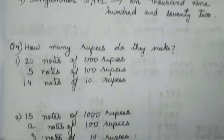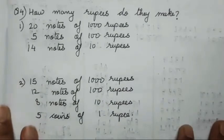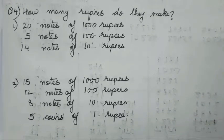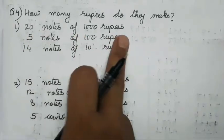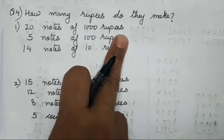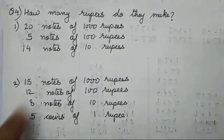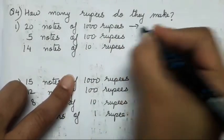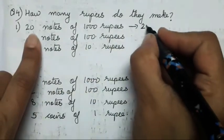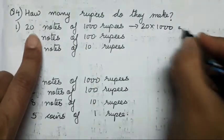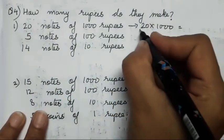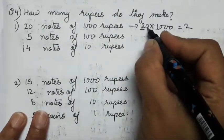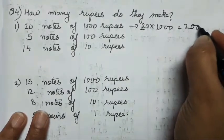Now let's move on to the fourth question — this question is a little tricky. How many rupees do they have? The number of rupee notes have been given. First you'll have to convert the notes into rupees. 20 notes of thousand rupees — it is going to be 20 into 1000: two multiplied by one is two, remaining four zeros — so 20,000.